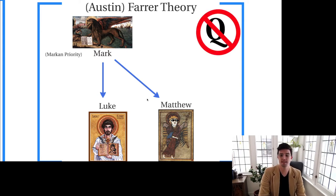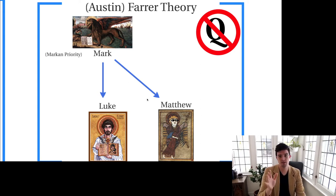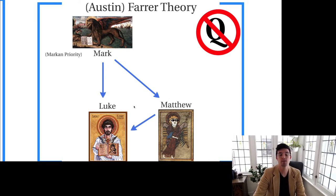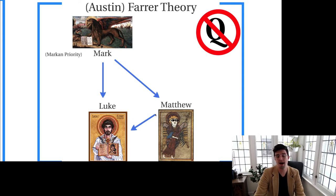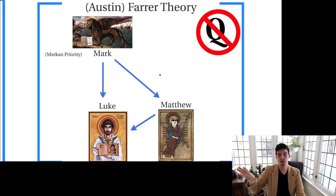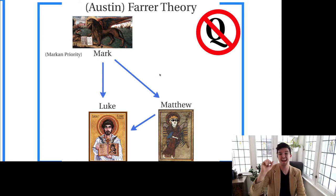What is different about the Farrer theory is that Farrer theorists dispense with the idea of Q altogether. Instead of using Q to explain the double tradition — the overlap between Matthew and Luke — they propose a line of influence running from Matthew into Luke. That is to say, Luke uses Matthew as well as Mark. The order of composition in this scenario goes: Mark writes first, not using other material; Matthew writes second, incorporating Marcan material; and Luke writes third, incorporating both Marcan and Matthean material.